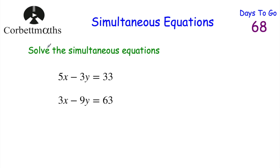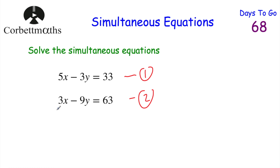Let's have a look at another simultaneous equation question — feel free to pause the video and try this one yourself. We've got 5x minus 3y equals 33 and 3x minus 9y equals 63. We want to solve these simultaneous equations, so I'll number them 1 and 2. We could multiply the top equation by 3 and the bottom by 5 to get 15x and 15x. But I'm going to multiply the top equation by 3 to get minus 9y, matching the minus 9y in equation 2.